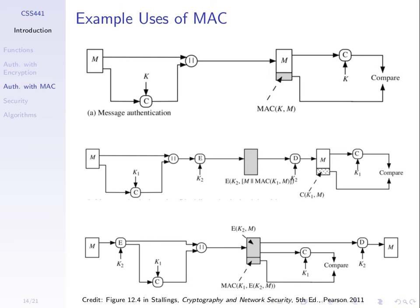The bottom two schemes both provide confidentiality — they encrypt the message. These are commonly referred to as authenticated encryption: we're encrypting the message for confidentiality plus doing authentication. Remember, if we just encrypt a message, authentication is only provided if we can correctly recognize the plaintext. But we don't want to rely on that, so these two schemes at the bottom are quite common today — for encryption, we don't just encrypt the message, we also calculate the MAC.